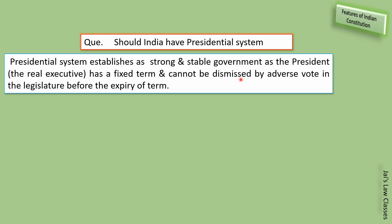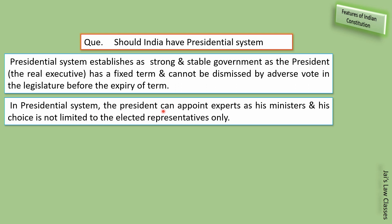President ko ek baar elect kar liya toh no-confidence motion jaise problems face nahi honi — ek baar chun liya, paanch saal ke liye. In the presidential system, the president can appoint experts as his ministers and his choice is not limited to elected representatives only — wo khud apne ministers chun sakta hai, aur chahey toh kisi bhi expert ko apna minister bana sakta hai.